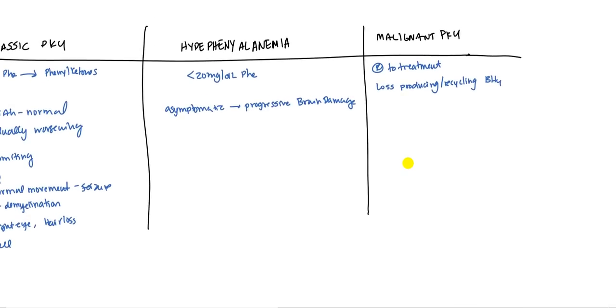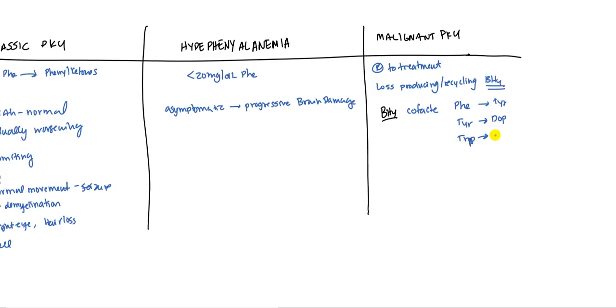And malignant phenylketonuria. Again, the problem is going to be more associated with BH4. So let's talk about what is BH4 and all the things that it does. BH4 is a cofactor for phenylalanine to be converted to tyrosine. It's also a cofactor for tyrosine to be converted to dopamine, and tryptophan to be converted into serotonin, and arginine to be converted to nitric oxide synthase enzyme.